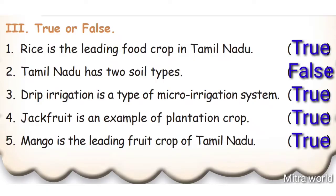Number 3: Drip irrigation is a type of micro irrigation system - True. Number 4: Jackfruit is an example of plantation crop - True. Number 5: Mango is the leading fruit crop of Tamil Nadu - True.